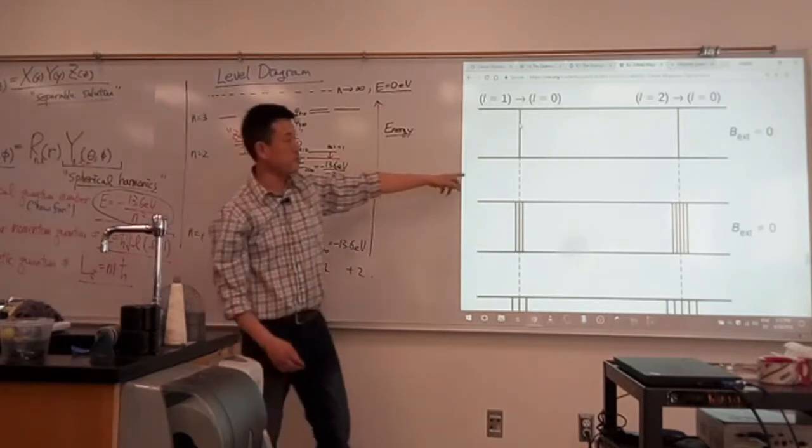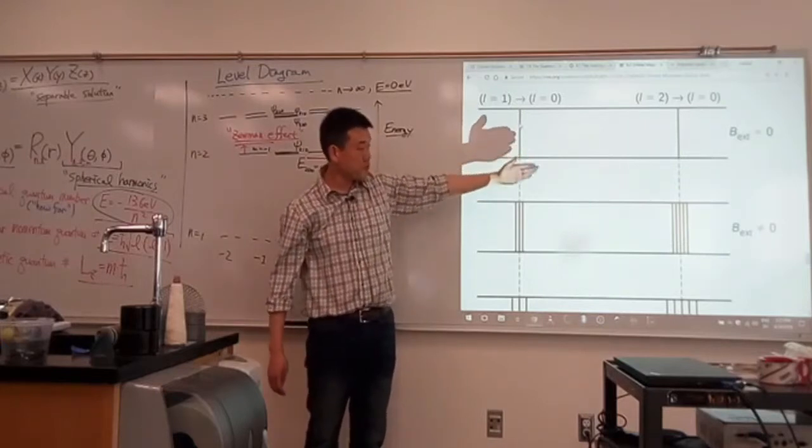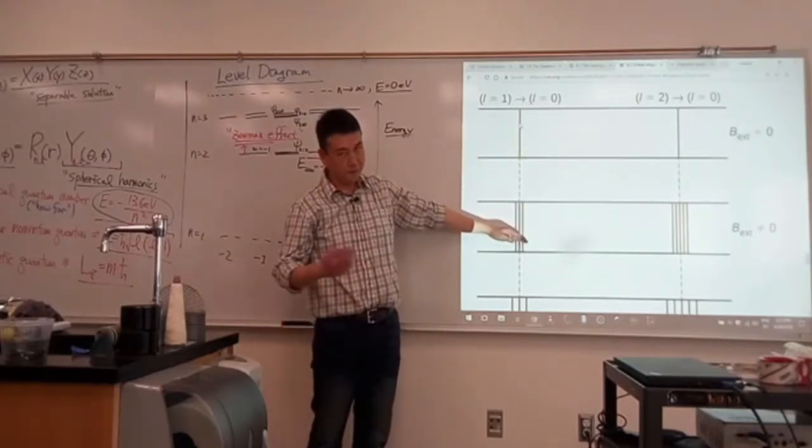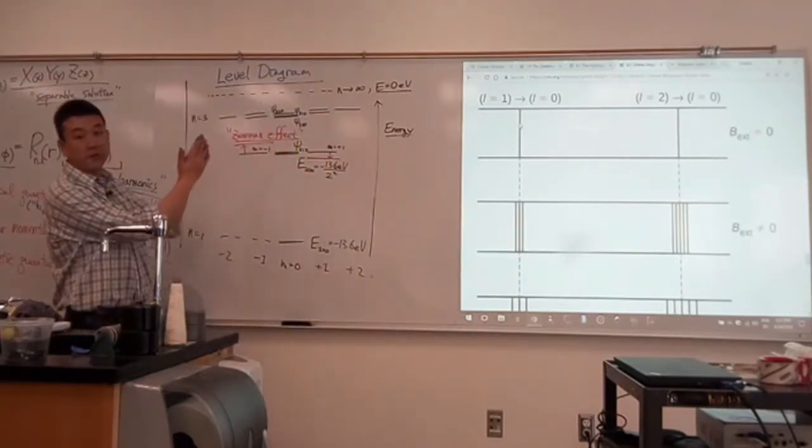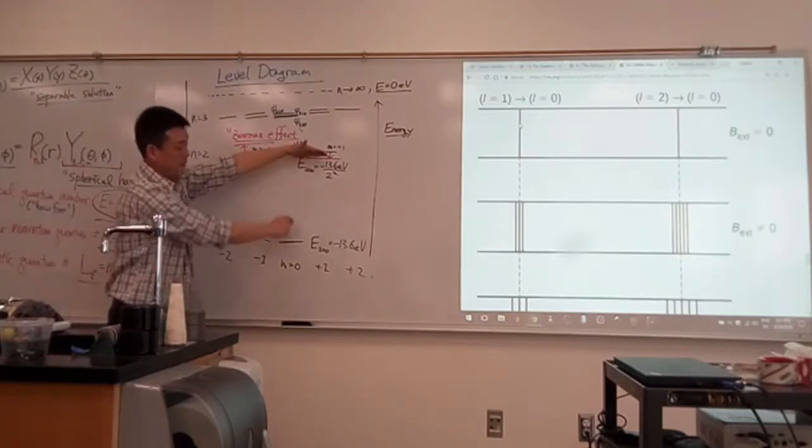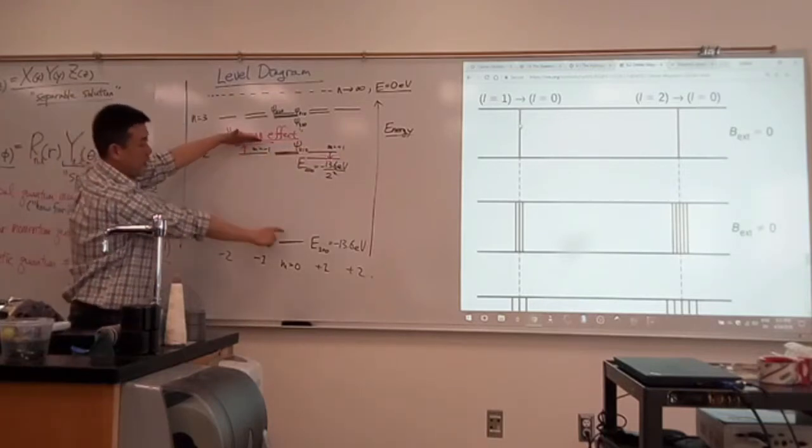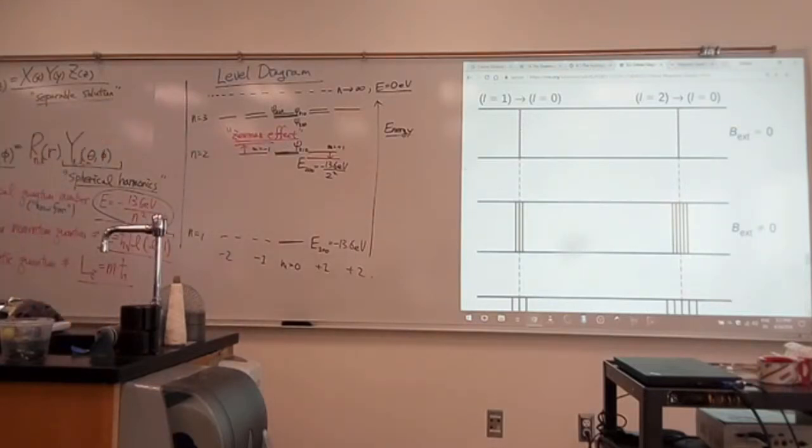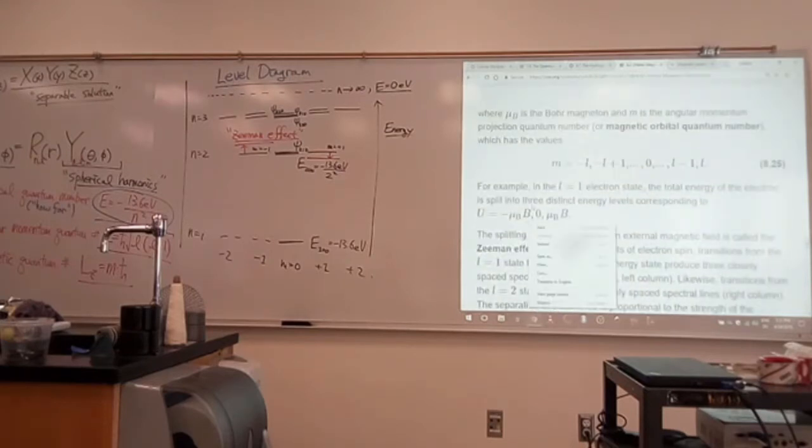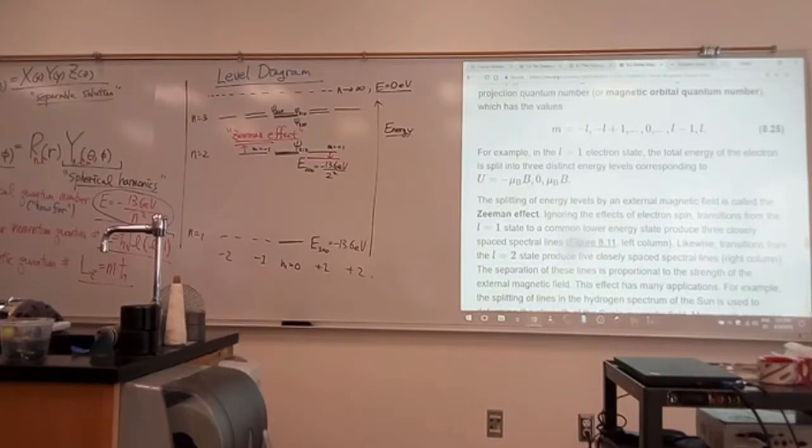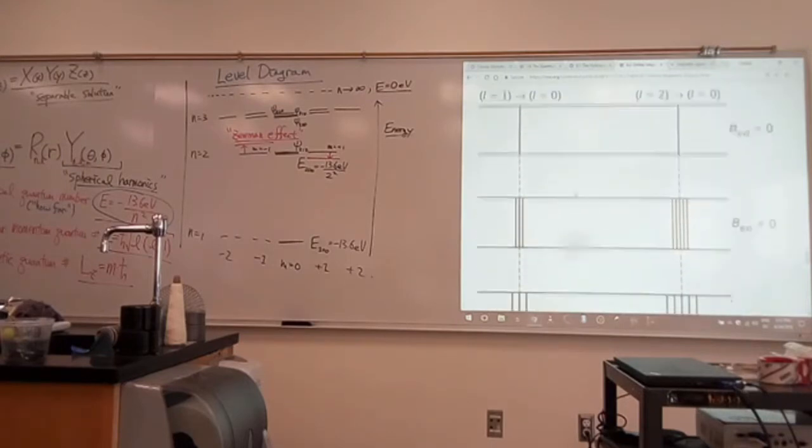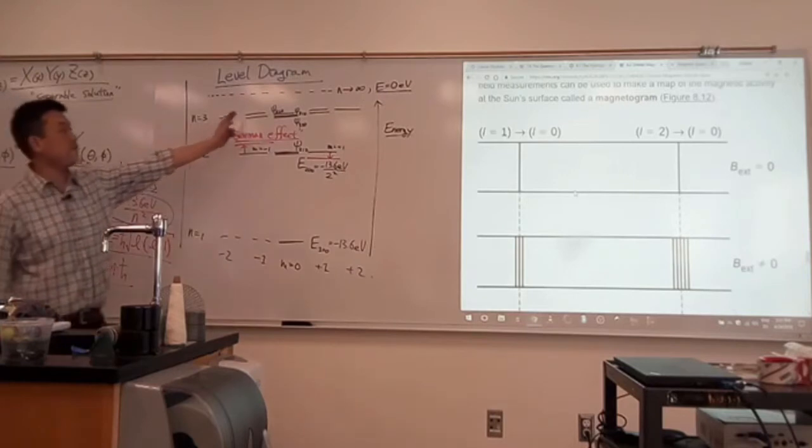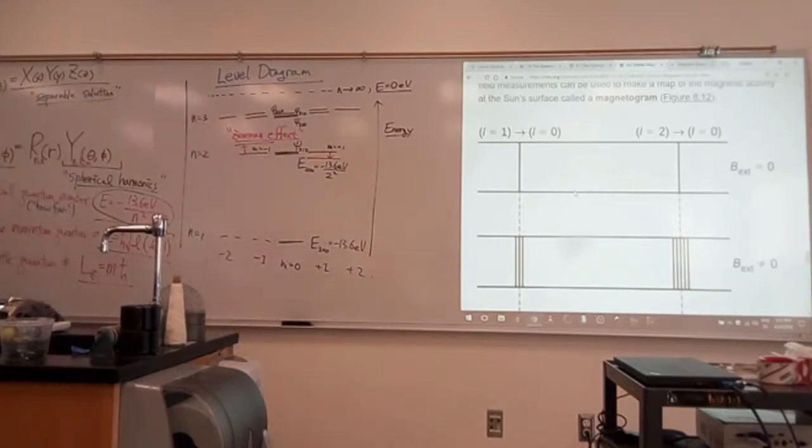With a zero applied field, all those three transitions show you the same energy. But once you start applying magnetic field, and if you have enough resolution to see it, then you will start to see that spectral line split. This transition will now involve lower energy. This transition will now involve higher energy. That's what this splitting here is showing. And when people do the experiment, they can see that this splitting is linear in the applied magnetic field.